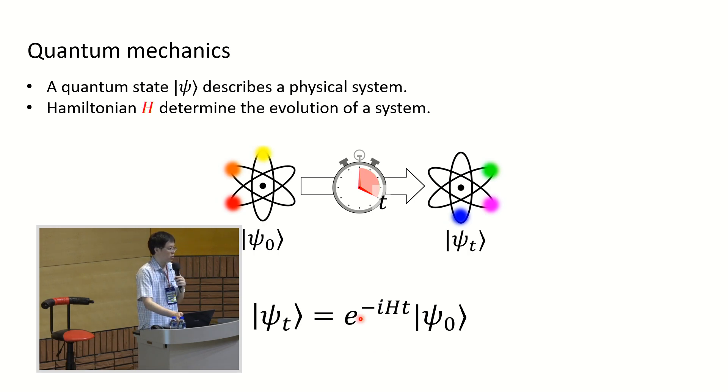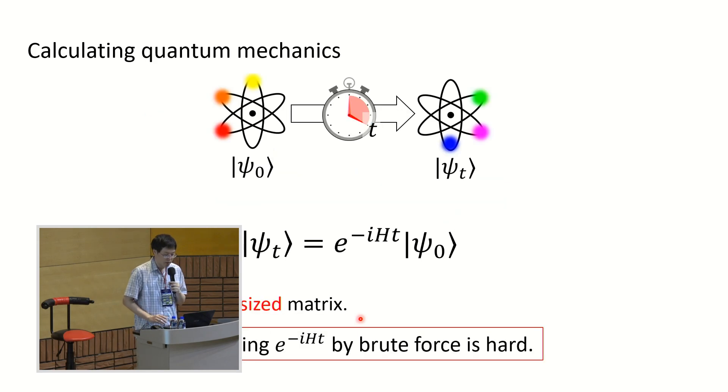So we know how to calculate the quantum mechanics and things are fine. But if you really think about calculating this, then you'll find all the calculations really hard. What is this H? H is a big matrix. So you are exponentiating the matrix here, but this H matrix is huge. It's an exponential-sized matrix.